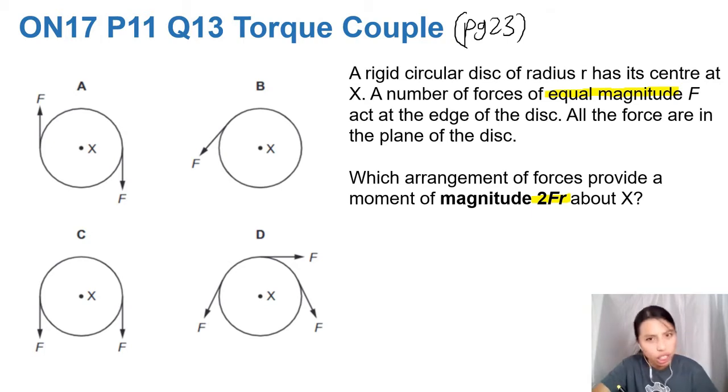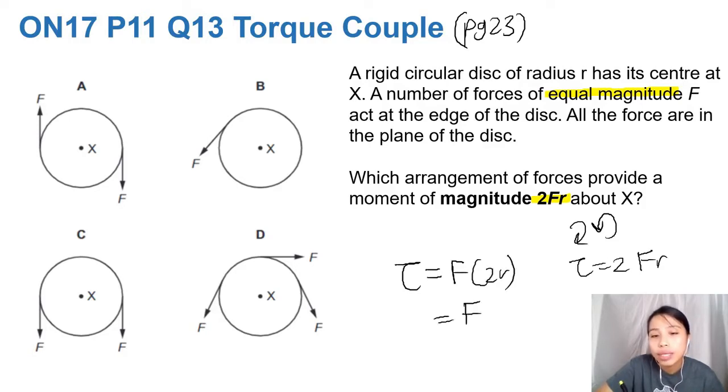Which arrangement of forces provides a moment of 2Fr about X? Can be clockwise, can be anticlockwise, as long as it's 2Fr. In other words, you can also say it is force times 2r, which is also force times the diameter or distance. So you can think of a couple, or you can think of individual forces.